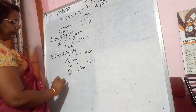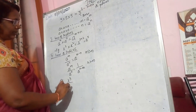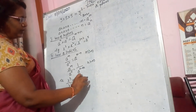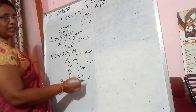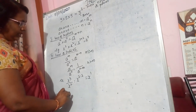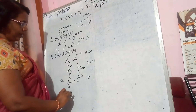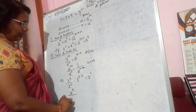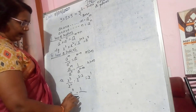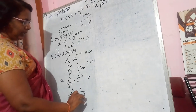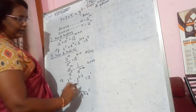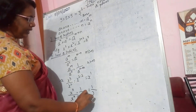For example, x raised to the power of 3 by x raised to the power of 2 gives x raised to the power of 3 minus 2, which equals x raised to the power of 1, which is x itself. Similarly, x raised to the power of 4 divided by x raised to the power of 9 — since 9 is bigger, the numerator becomes 1 and the denominator is x to the power of 9 minus 4, giving 1 by x raised to the power of 5.